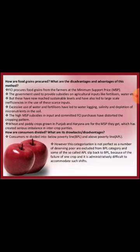How are food grains procured and what are the disadvantages and advantages of this method? FCI procures food grains from the farmers at Minimum Support Price, MSP. The government also provides subsidies to agricultural inputs such as fertilizers, water, etc. But these have not reached sustainable levels and have led to large-scale inefficiency in the use of these scarce inputs.